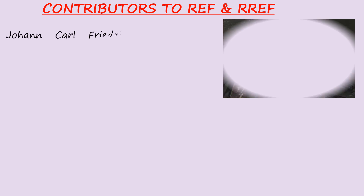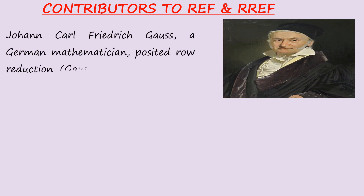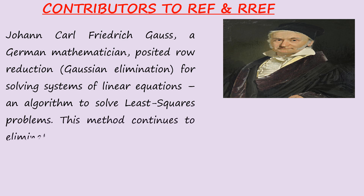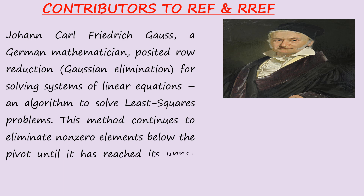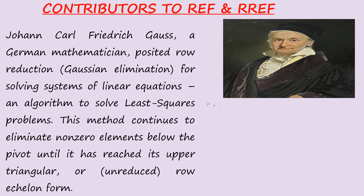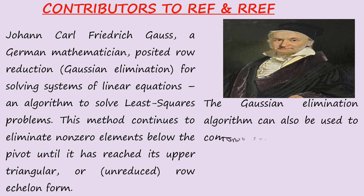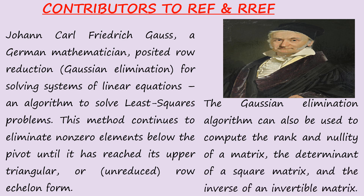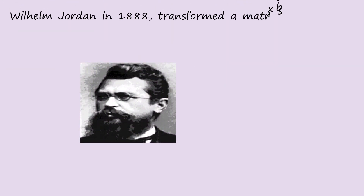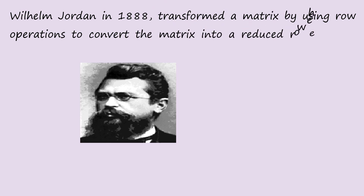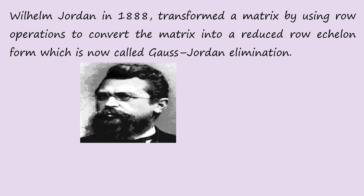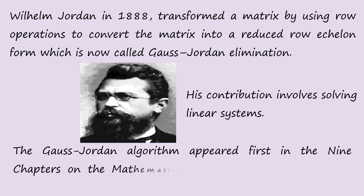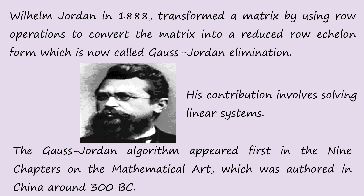Contributors to REF and RREF: Johann Carl Friedrich Gauss, a German mathematician, posited row reduction — Gaussian elimination — for solving systems of linear equations and least squares problems. This method eliminates non-zero elements below the pivot until reaching upper triangular or un-reduced row echelon form. Gaussian elimination can also compute the rank, nullity, determinant, and inverse of a matrix. William Jordan in 1888 transformed a matrix using row operations to convert it into reduced row echelon form, now called Gauss-Jordan elimination. The Gauss-Jordan algorithm appeared first in the ninth chapter of the Mathematical Art, authored in China around 300 BC.